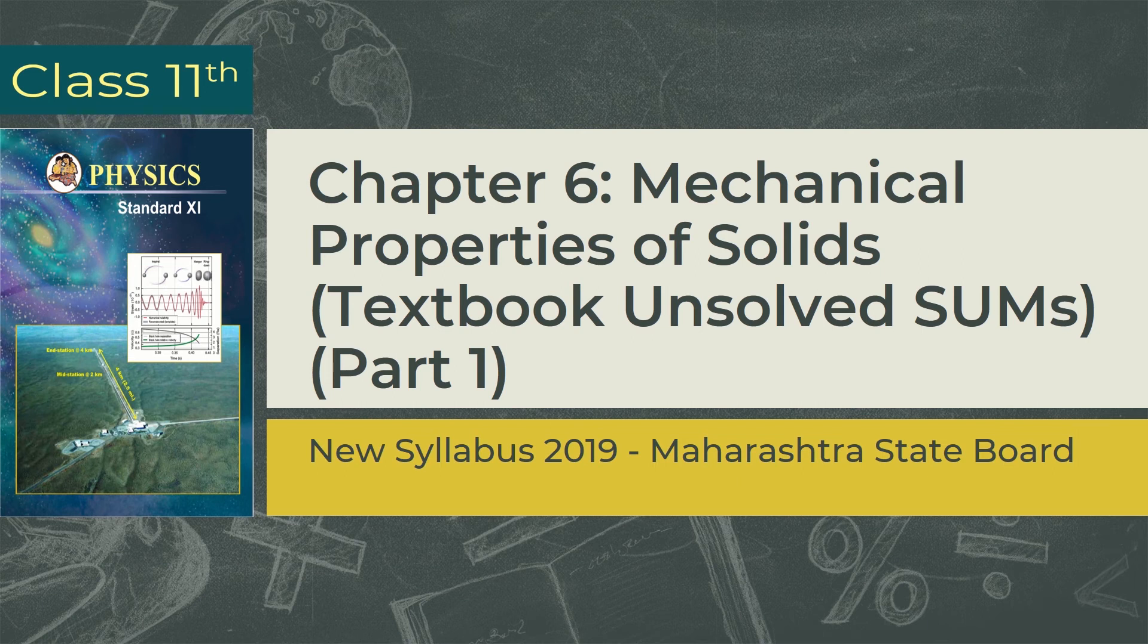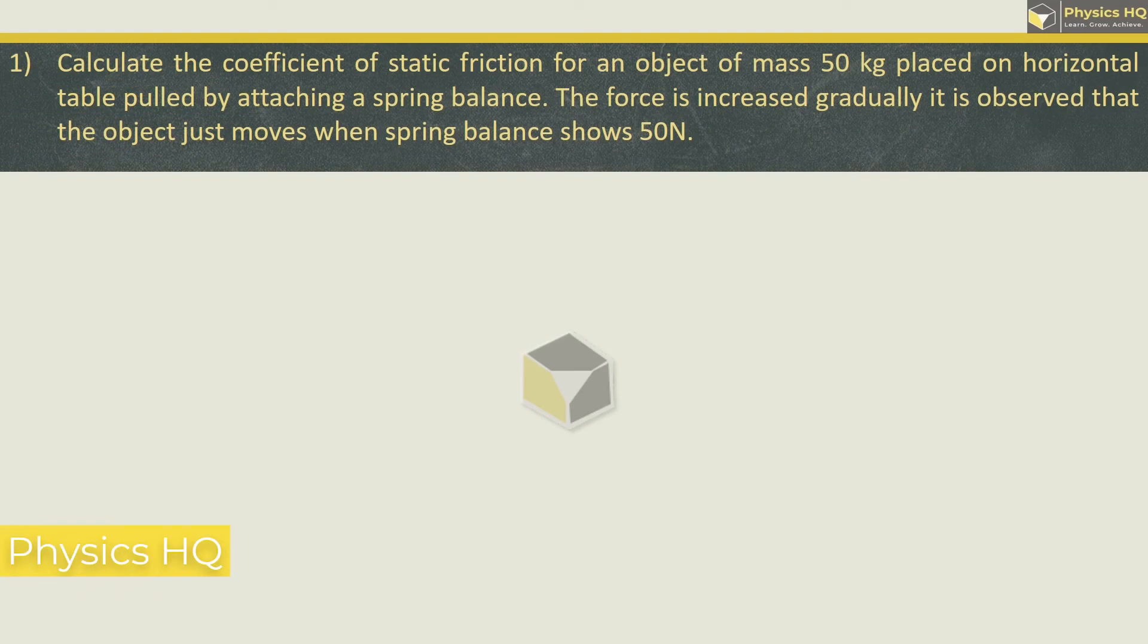Let us start with the first sum. Calculate the coefficient of static friction for an object of mass 50 kg placed on horizontal table pulled by attaching a spring balance. The force is increased gradually. It is observed that the object just moves when the spring balance shows 50 N.